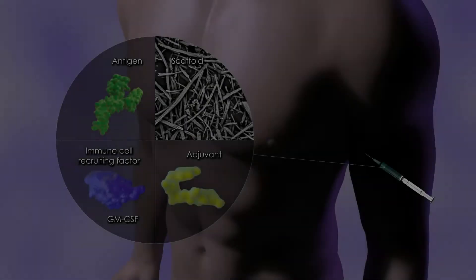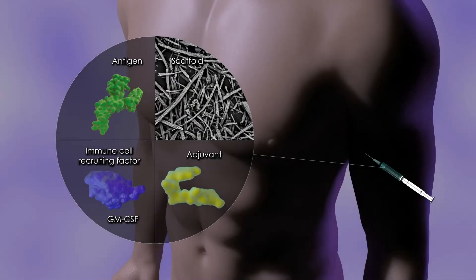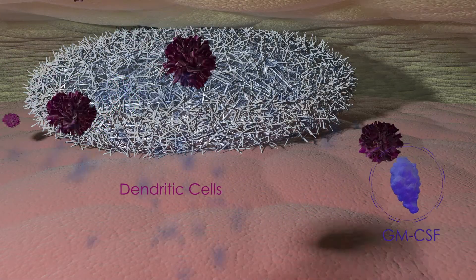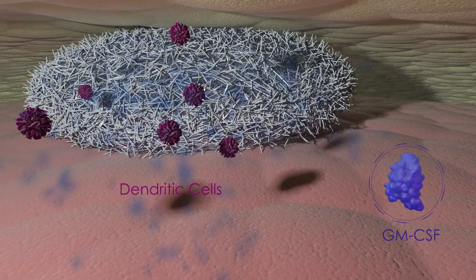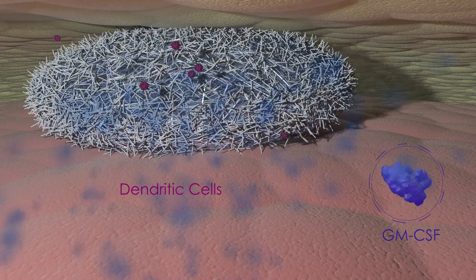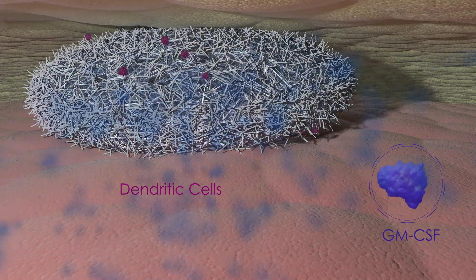The novel design of Omnivax provides unique advantages over traditional vaccines. Omnivax uses an injectable biomaterial that forms a porous scaffold into which dendritic immune cells can be recruited by released immune cell-recruiting factors.